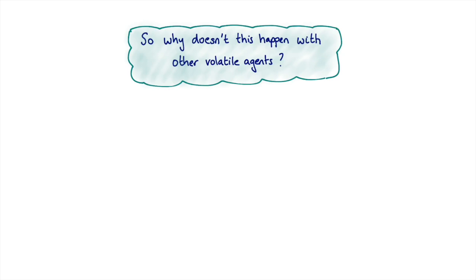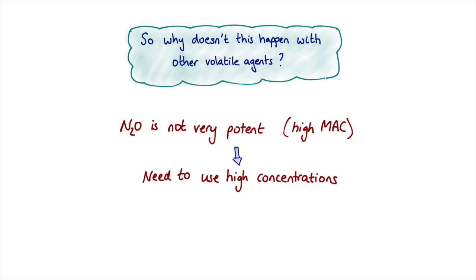A natural question to ask at this point is, well, why don't we get this with the other volatile anesthetic agents? What it boils down to is the fact that we don't use enough of them. Nitrous oxide is not a very potent agent, it has a high MAC, so you need to use lots of nitrous in order to get a clinically significant effect. Because you need to use high concentrations of nitrous, you end up getting a significant change in alveolar volume, which then results in the concentration effect. With the other inhalational anesthetic agents, because you're using them at much lower percentages, you don't get a clinically significant change in alveolar volume, and therefore you don't get a concentration effect.